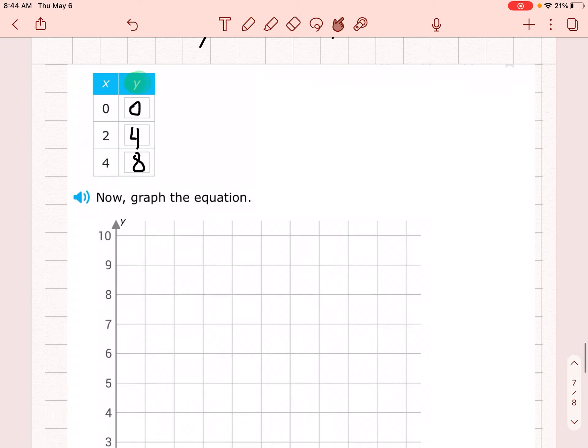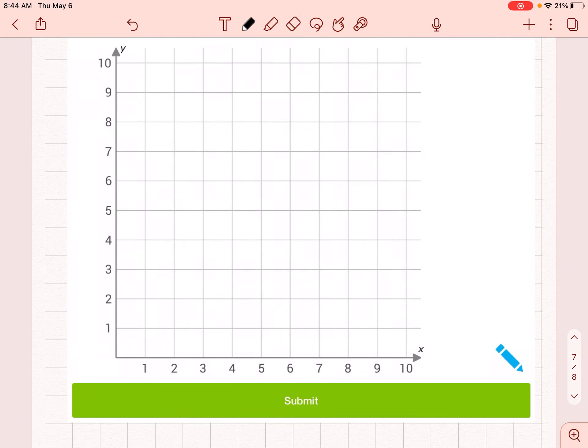When x is 0, y is 0. So if x is 0, that would be right here. When x is 0 and y is 0, that's a point right here.